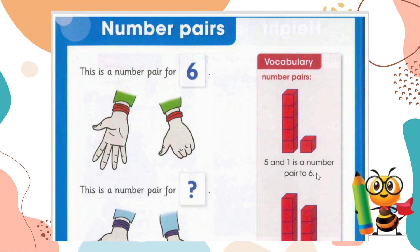For example, your right shoe and your left shoe make one pair of shoes — so two things make one pair. Similarly, when two numbers come together to make one number, it is known as number pairs. We are going to learn how to make number pairs and how we can identify them.